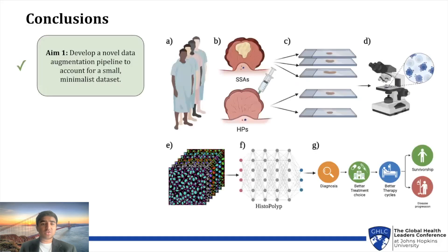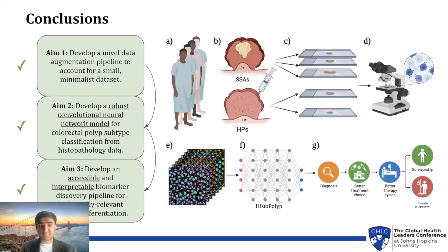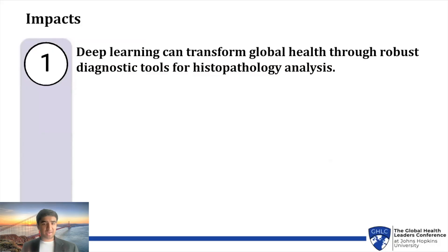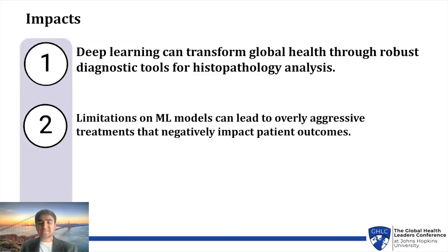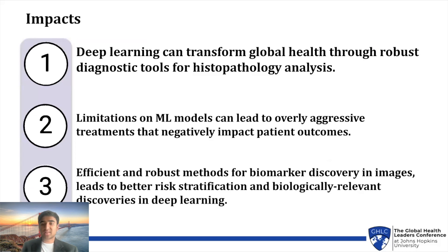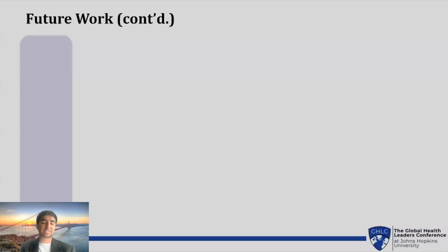In summary, my research achieved state-of-the-art results in an interpretable manner, effectively addressing the primary limitations of precision medicine: lack of transferability, data accessibility, and interpretability. The workflow image on the right provides a visualization of my research pipeline. I would like to highlight three impacts of my work. First, I demonstrated that deep learning can revolutionize global health by providing robust diagnostic tools for histopathology analysis. Second, I showcased how limitations in ML models can result in overly aggressive treatments negatively affecting patient outcomes worldwide. Lastly, I illustrated that efficient and robust methods for biomarker discovery in images lead to enhanced risk stratification and biologically relevant insights in deep learning.